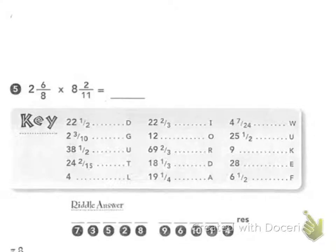For tonight's homework we have the multiplying mixed numbers riddle, 54. It says, what do you call cows that can't produce milk?